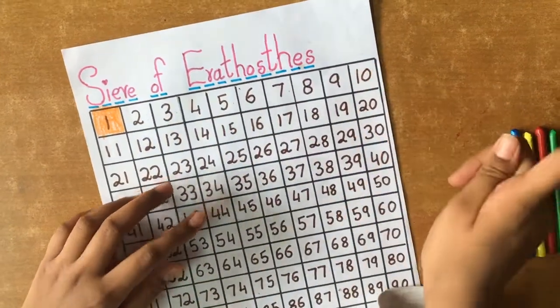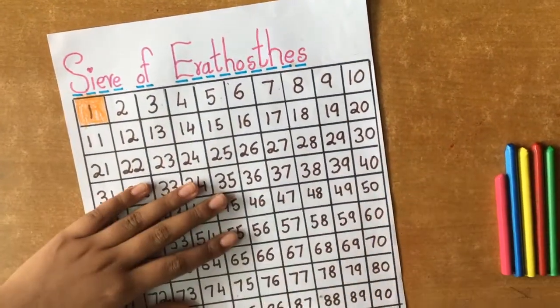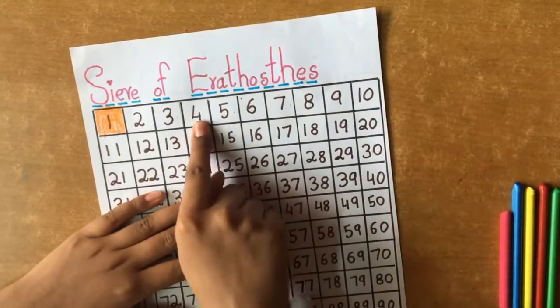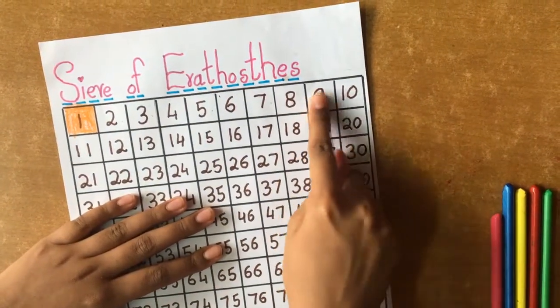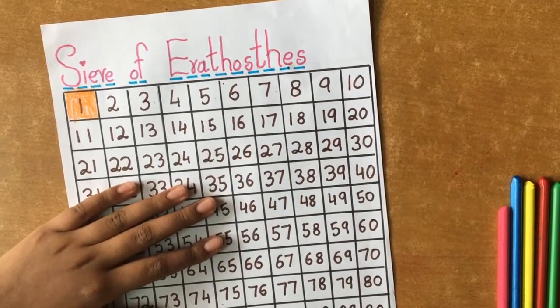Now we will see the first row. Here, all the composite numbers are 4, 6, 8, 9 and 10. Let's color them.